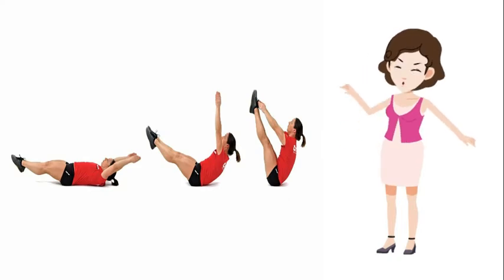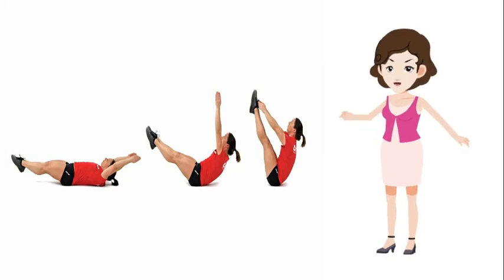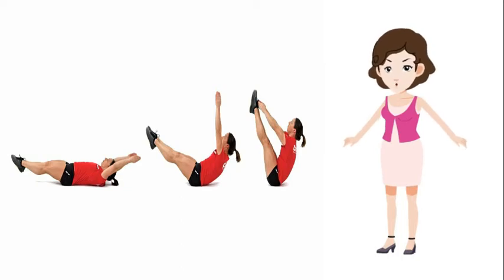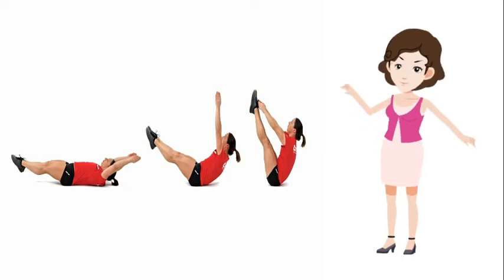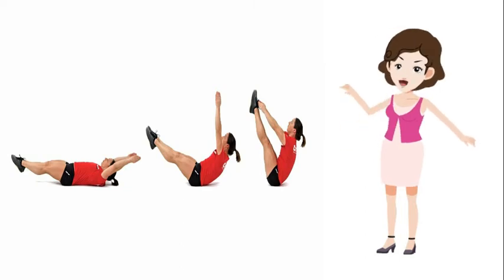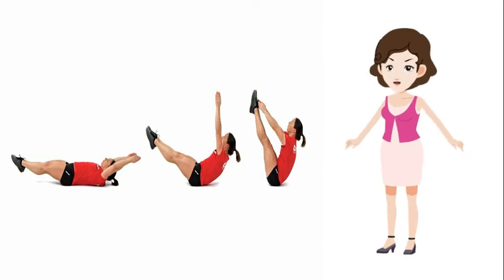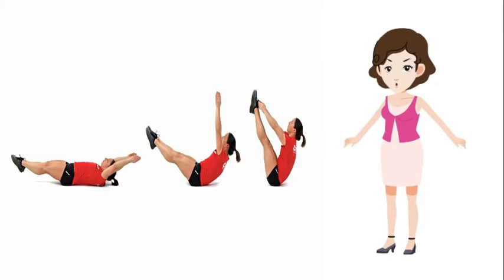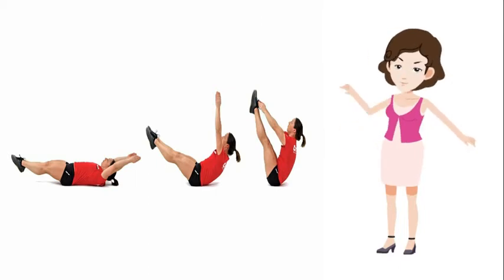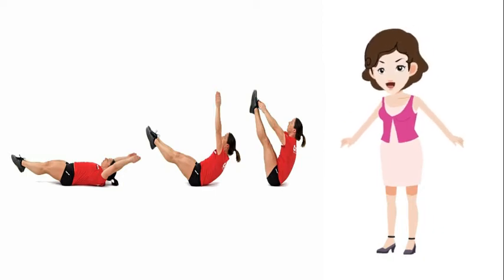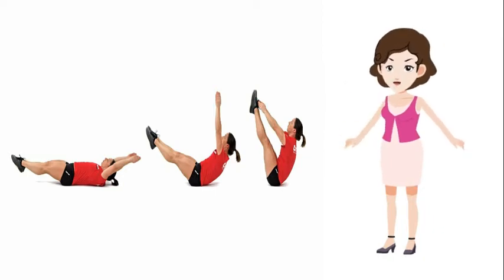V-Ups target all the abdominal muscle groups: transverse abdominis, obliques and rectus abdominis. Lie down, keeping your legs flat and your arms stretched over your head. Crunch and lift your torso and legs off the floor, reaching for your feet. Return to the starting position. Repeat 10-12 times. If it's a bit too challenging, lift one leg at the time alternating.